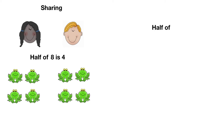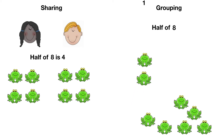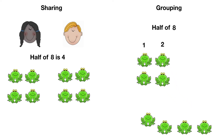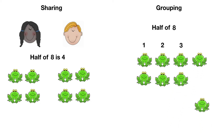Or we can find half of eight by grouping in twos, like this. One group of two, two groups of two, three groups of two, four groups of two. Half of eight is four.